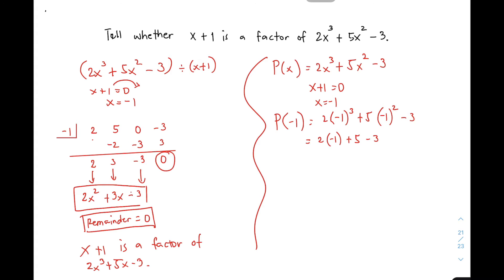Simplifying this, this will become 2 times negative 1 plus 5 minus 3. So para naging ganyan, kasi negative 1 natin yung kanyang exponent is odd. Therefore, negative yan. Tapos negative 1 raised to 2, ito tayo. This is positive 1. Simplifying this equation or this part. This is negative 2 plus 5 minus 3. So this is 0. So ating p of negative 1 is 0. Automatic, ito yung remainder natin kasi gumamit nga tayo ng remainder theorem.